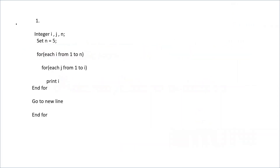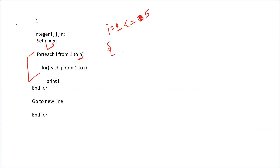Here is our first question. We are having three integer values i, j, and n, and the value of n has been set to five. There's a nested for loop — the outer loop runs each i from 1 to n, meaning i is initialized to 1 and runs while i is less than or equal to n, which is 5.